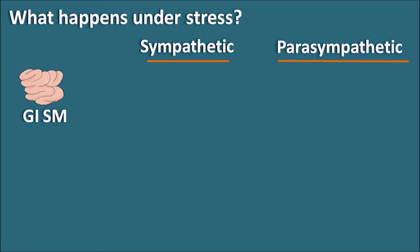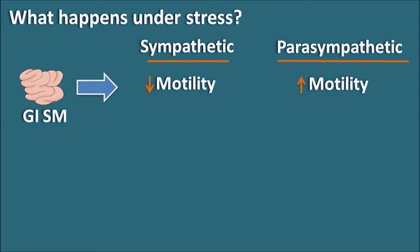Regarding GI smooth muscle, the sympathetic system decreases motility whereas the parasympathetic system increases motility. Under stressful conditions, cells require more blood supply, so blood from the GI tract is diverted to systemic blood vessels. Thus GI motility is reduced by the sympathetic system due to reduced blood supply, while the parasympathetic system, acting under restful conditions, increases GI motility.